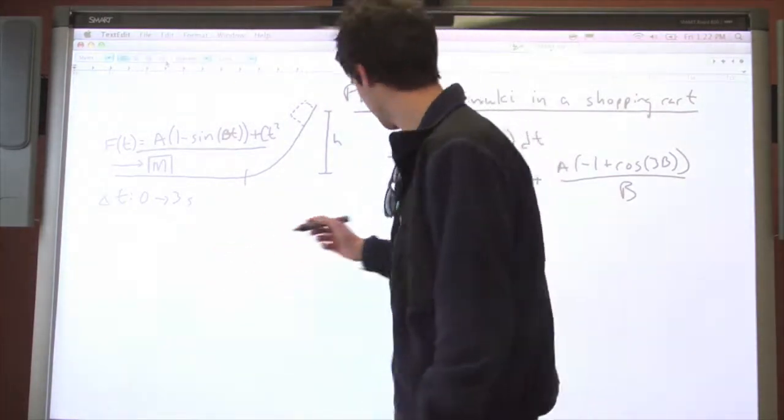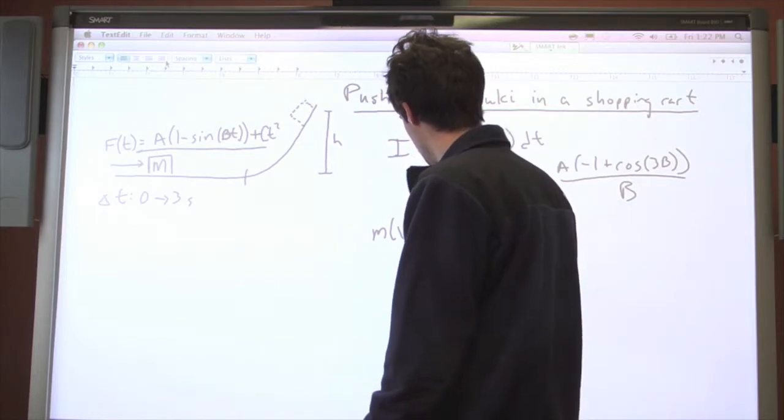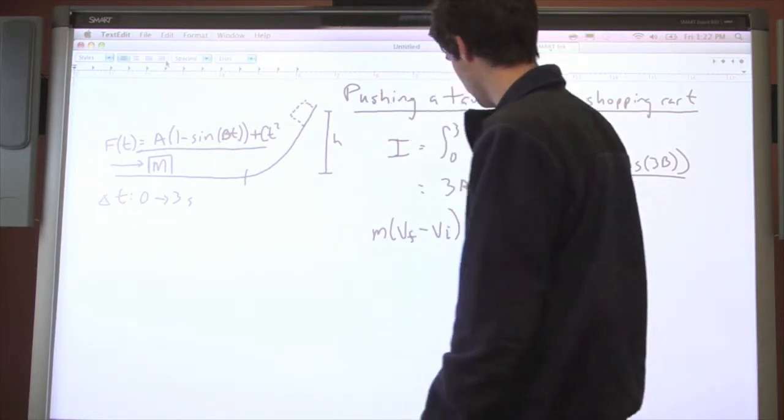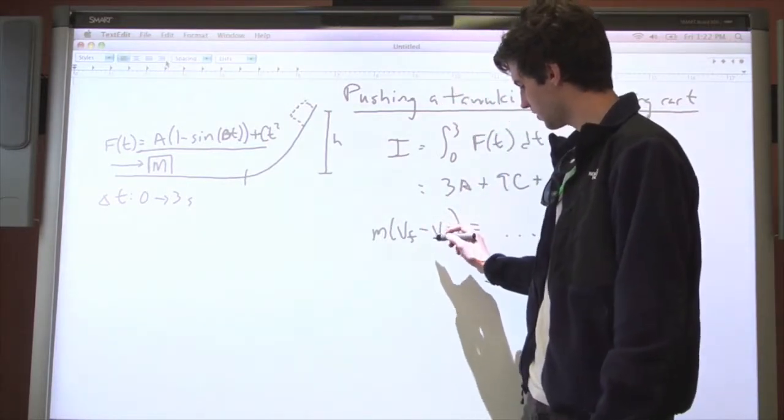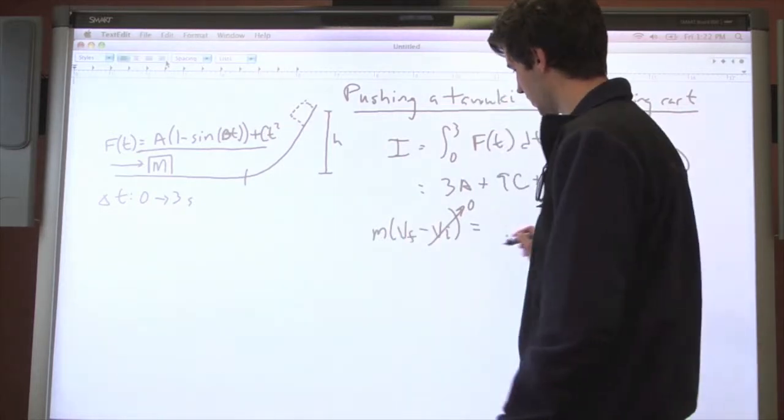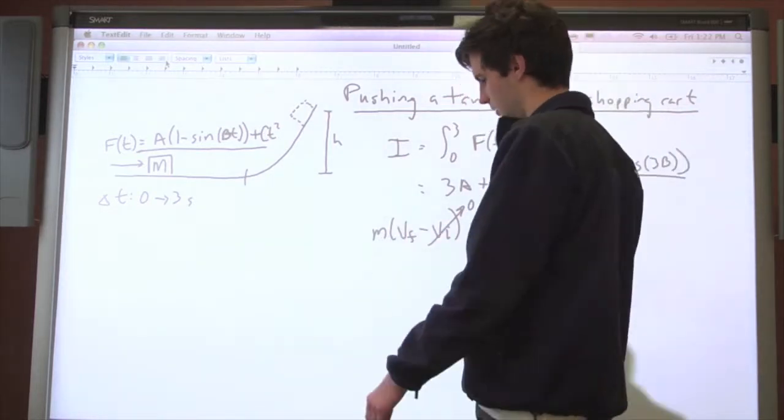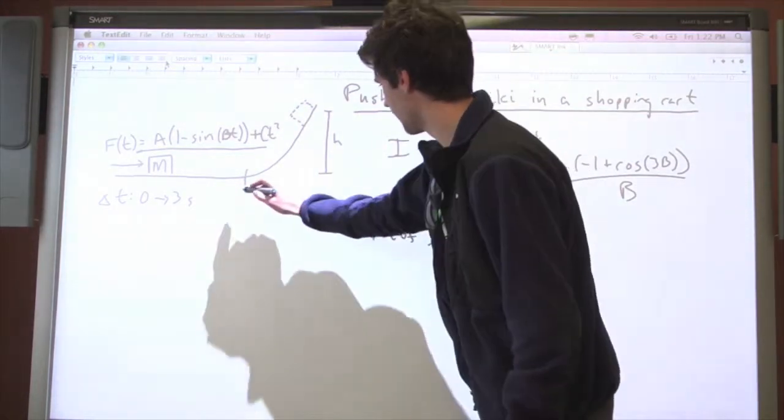So I'll just write it out. m v final minus v initial equals that stuff. So then we know, hey, initially it starts at rest, and so we can just bring one over mass over to the other side, and say that that's the speed at the bottom of the hill, right here. And that's what I'm calling v final.